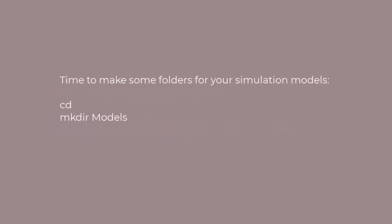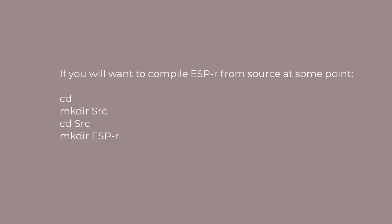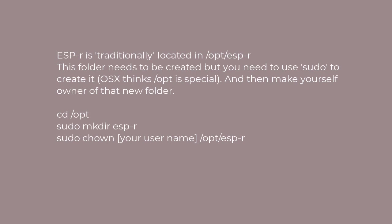Now let's make some folders. Go back to your home folder and do mkdir models. That's a convenient place to put your models that you're working on or exemplars you're wanting to work with. It's also sometimes convenient to have a source folder in case you want to compile ESPR from scratch in the future, so follow those instructions to create that option. ESPR traditionally lives in /opt/espr on Linux machines and Windows Subsystem for Linux, and the same applies for OSX. We need to create this folder, but you'll have to use a sudo command because OSX considers /opt a special place. Then make yourself owner of that new folder — follow those commands.